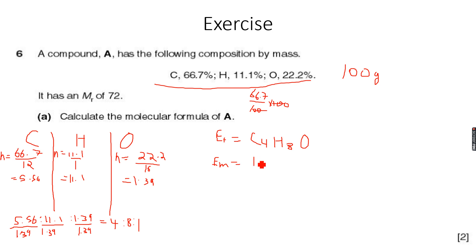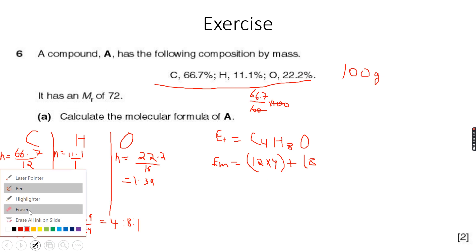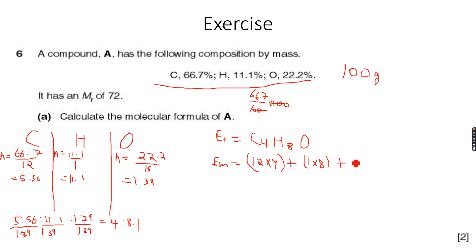So the empirical mass is 12 times 4, because 4 carbon atoms and 12 is the atomic mass of carbon, plus 1 times 8 for hydrogen atoms, plus 16 times 1 because we have 1 oxygen atom. When we add all of these, we get 12 into 4 plus 8 plus 16, which is 72.